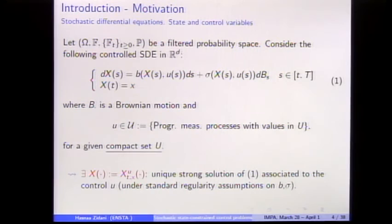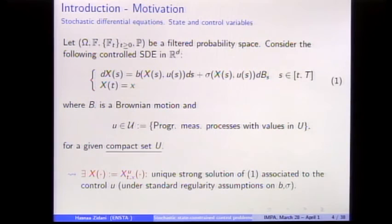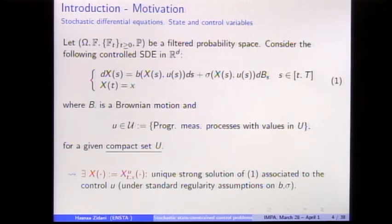Just to fix the notations: I will work with general controlled stochastic differential equations. X will denote the state. I assume a differential equation with B the usual drift, sigma the usual volatility, and B the Brownian motion. The SDE is controlled through an input function which is a measurable function taking values in a compact set. It is very important to have a compact setting in the Hamilton-Jacobi framework. I assume all functions satisfy standing assumptions so that the SDE has a unique strong solution.